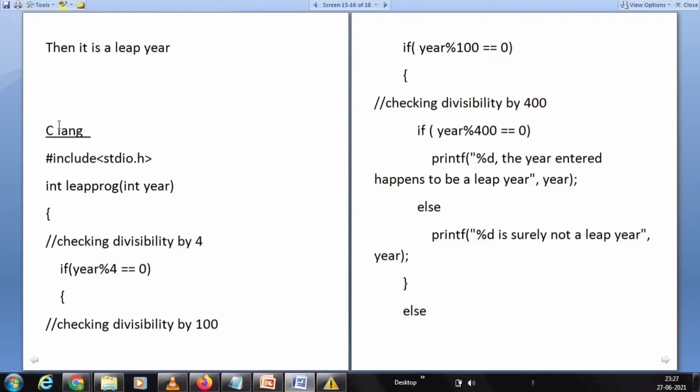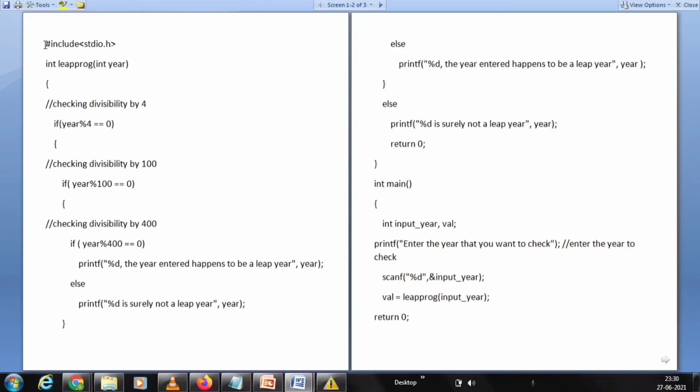Let's see the C program for this. Hash include stdio.h, int leapYear int year. Checking divisibility by 4. If year mod 4 equals 0, then we need to check the divisibility by 100. If year mod 100 equals 0, then we need to check the divisibility by 400. If year mod 400 equals 0, then print 'the year entered happens to be a leap year'. Else, 'it is surely not a leap year'. Else, 'the year entered happens to be a leap year'. Else, 'it is surely not a leap year'. Return 0.